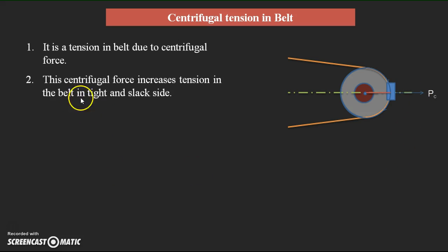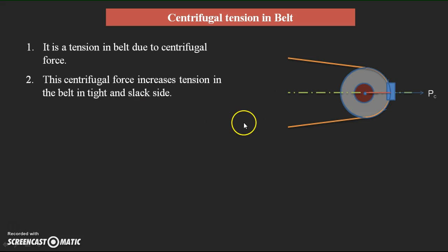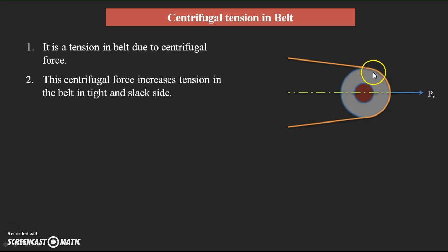This centrifugal force PC increases the tension in the belt on both the tight side and the slack side, because the belt rotates over the driver and driven pulleys. Due to this centrifugal tension, there is an increase in the tension of the belt.